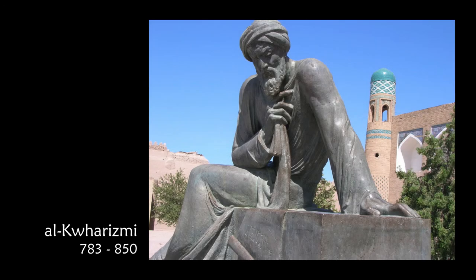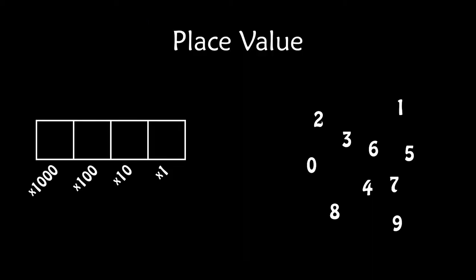Al-Khwarizmi was one of the leading figures responsible for us adopting a place value number system. In that number system, you can't just shuffle up the digits, you can't place them in boxes randomly, because the place matters. So the 2 here means 20, but the same symbol 2 over here means 2,000.